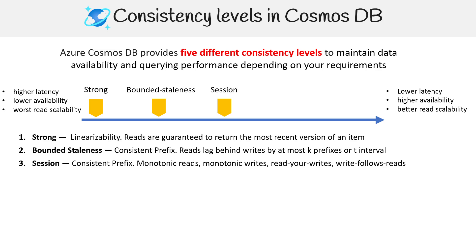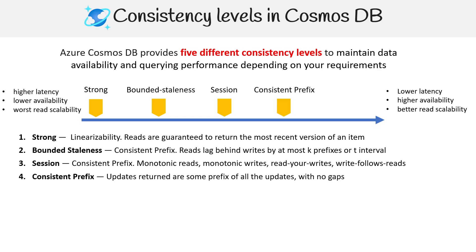Session consistency has a consistent prefix, monotonic reads, monotonic writes, read your writes, and write follows reads. Then consistent prefix — updates returned are some prefix of all updates with no gaps. And eventual means out-of-order reads, so depending on what partition or replica is hit, the data might not be fully up to date.